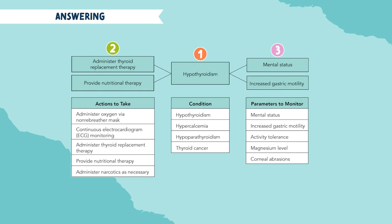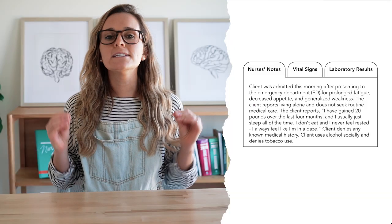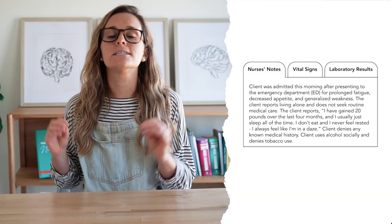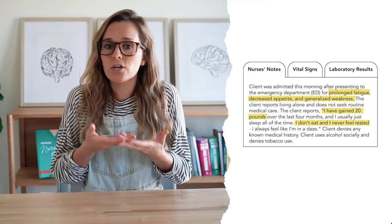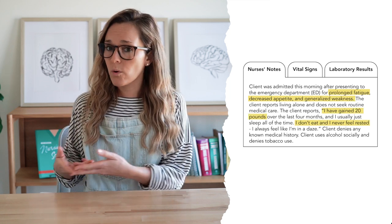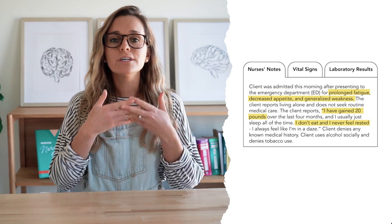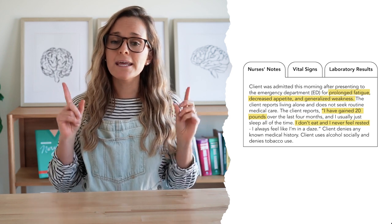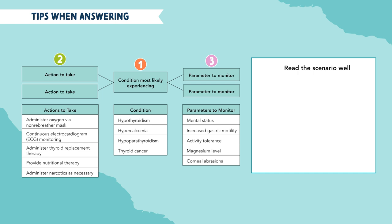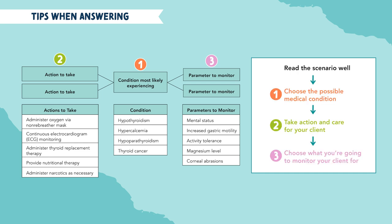Let's talk about some tips for Bowtie Questions. When reading through these scenarios, learn to recognize the cues. Ask yourself what findings are normal or abnormal. Answering the Bowtie Questions might seem daunting, but think of it as three different parts, like three multiple choice questions. This way you can focus on one step at a time.